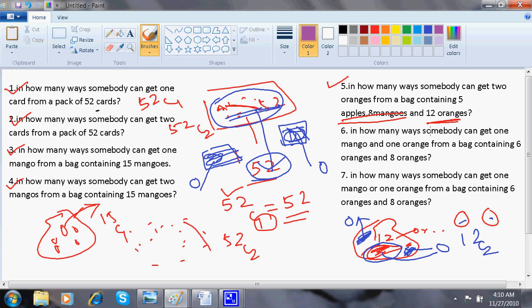So, in how many ways I can get two oranges? Has nothing to do with the apples and the mangoes. So I'll erase this from the question. The question is now becoming question number four. It's one and the same question. So this is 12 C2.